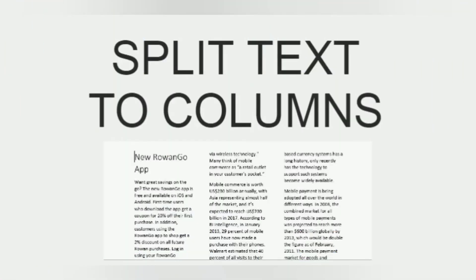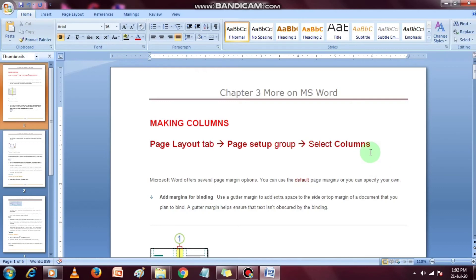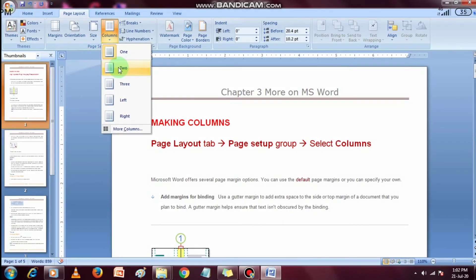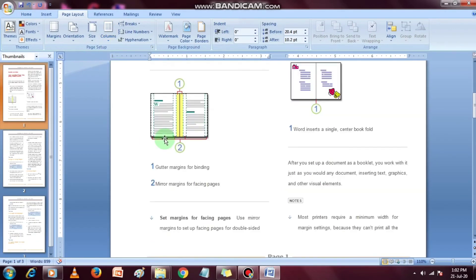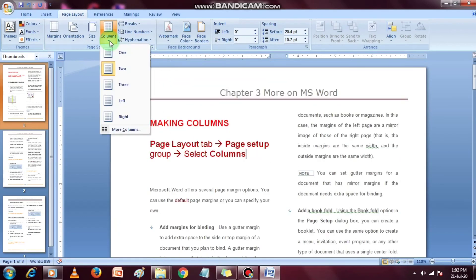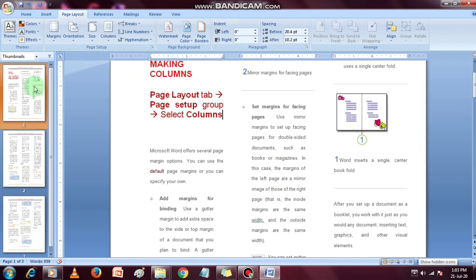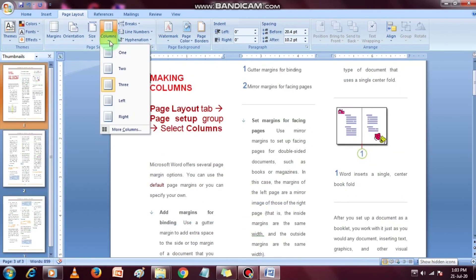You can split your text into columns as shown in the image. It helps you make your text more readable and presentable. The steps involved in this process are as follows. Open the document. Select the Page Layout tab. In the Page Setup group, click the Columns command. It displays a list of options to split text into columns. Select the desired option. You can also adjust the width of the columns according to your requirement.